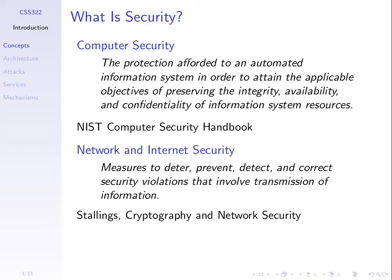To deter violations is to make people not want to violate the security of my network. To prevent them is to make it impossible for someone to violate the security of my network. Detect is if someone does violate the security, that I at least know that it happened. And correct is if something is violated in my network, then I can fix it. So we'll see that prevention and detection usually go together. These are just two definitions of computer security and network and internet security. The second one is from your course textbook by William Stallings called Cryptography and Network Security.